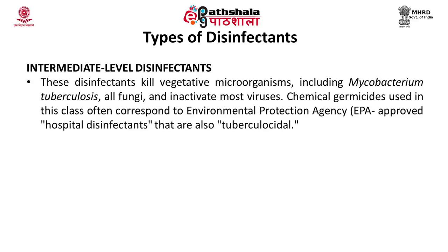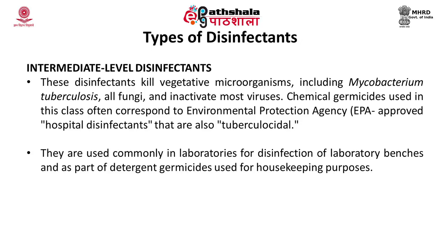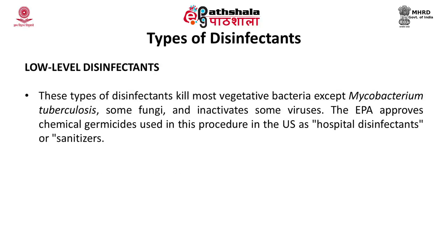The second level is intermediate disinfectants. These kill vegetative microorganisms including Mycobacterium tuberculosis, all fungi, and inactivate most viruses. These chemical germicides correspond to the tuberculocidal class per EPA classification and are commonly used in laboratories for disinfection of benches and as part of detergent germicides for housekeeping. The third level is low-level disinfectants. These kill most vegetative bacteria except Mycobacterium tuberculosis, some fungi, and inactivate some viruses. The EPA approves these as hospital disinfectants or sanitizers.